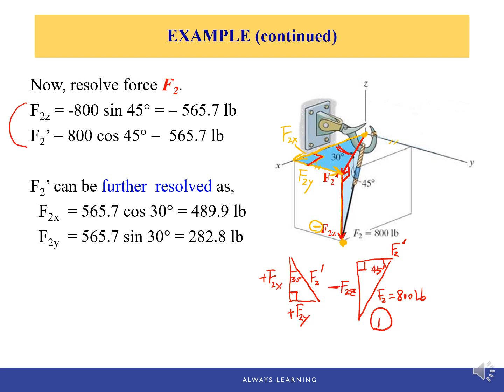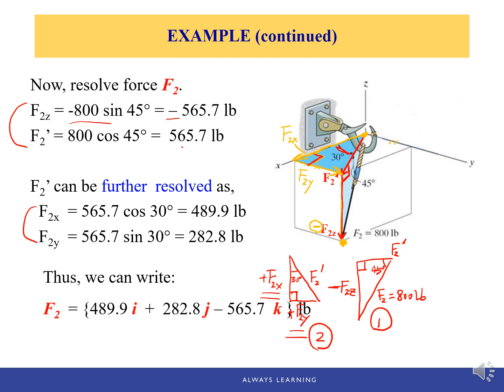Don't forget, F2z has a negative sign in front of it. We use trigonometry to find the magnitude of F2z and attach the negative sign. F2 prime is a positive value. F2x and F2y are both positive. Then we move to triangle two to further resolve F2 prime into F2x and F2y, and finally write force F2 in Cartesian vector form.